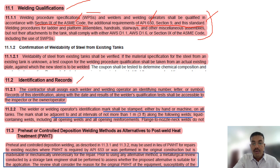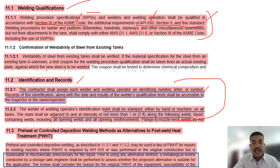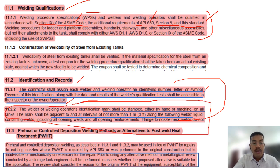For identification and records, you will get one question. The contractor shall assign each welder and welding operator an identifying number, letter, or symbol. Records of this identification along with the date and result of welder qualification tests shall be accessible to the inspector and owner/operator. The welder or welding operator identification mark shall be stamped — by hand or machine — at intervals not more than one meter or three feet along the weld.